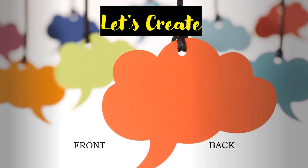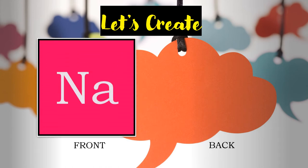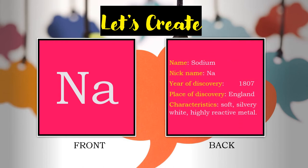For the Let's Create part, you are asked to make a flashcard of an element. Here is an example — you can make your own design and make it as colorful as you want, as long as the required information is there. The information needed includes: the name of the element, the symbol (as the nickname), the year of discovery, the place of discovery, and the characteristics of the element. Put the symbol on the front and the information on the back, then attach them together as one flashcard.